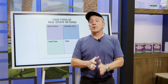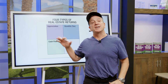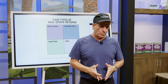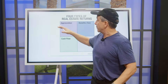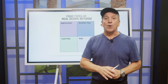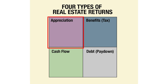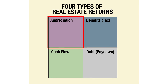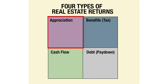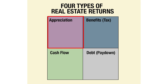But more importantly, I'm going to get into separate videos on each one of the quadrants and go a little bit more deep. But for purposes of this video, I'm going to walk you through the first four. So the first one — a lot of people talk about appreciation, which of course is one of the first of the four types of real estate returns.